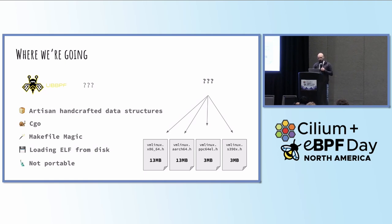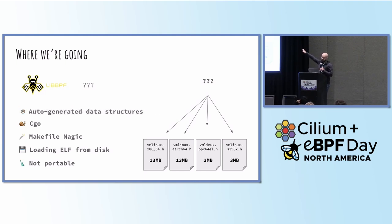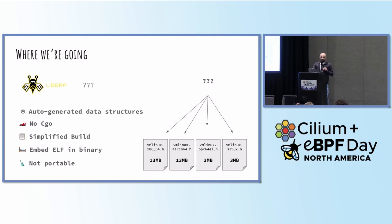So where we wanted to go: on the kernel side we'd make some changes to get rid of the vmlinux stuff. On the user space side we'd potentially change the eBPF library to get rid of handcrafted data structures and make them auto-generated, get rid of CGO and have something in pure Go, get rid of the makefile magic for a simpler Go developer experience, embed the object file inside the binary so we don't have two things to ship around, and get to a much more portable eBPF codebase.